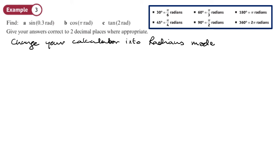So the first one, sine of 0.3 radians. It's saying give you answers to decimal place. So if I do that on the calculator, sine of 0.3, I get 0.2955, so on. So two decimal places would be 0.30.